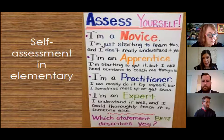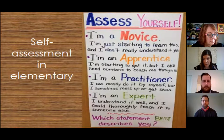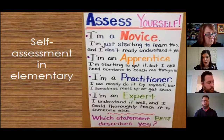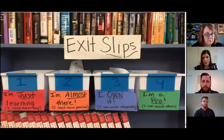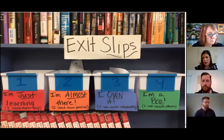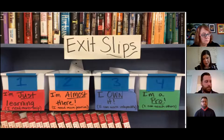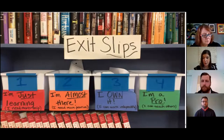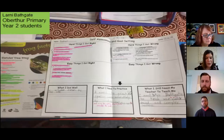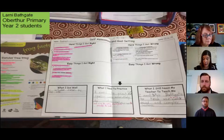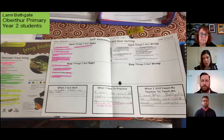Reflection is part of being an assessment-capable learner. We want to provide opportunities for students to assess where they are related to their destination. Am I a novice? Am I an apprentice, practitioner, expert? I can do this through exit slips sorted into categories: I'm just learning, I'm almost there, I own it, I'm a pro. These can be submitted virtually via Google Form, Google Doc, email, or whatever medium you prefer. Another example: what did I do well on, what do I need to practice, and what do I still need my teacher to help me with?